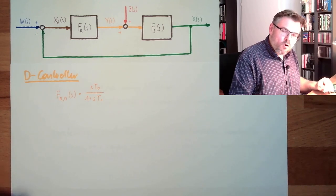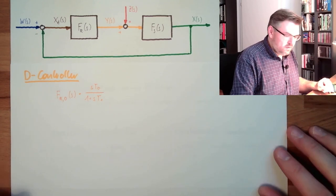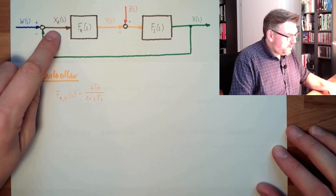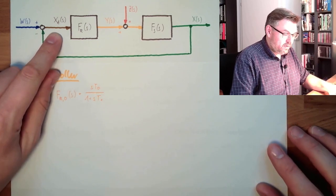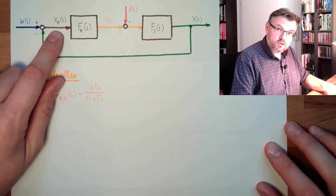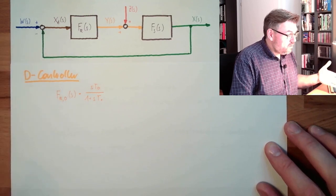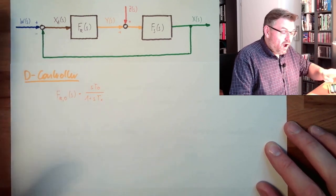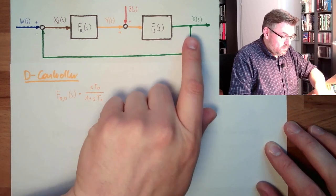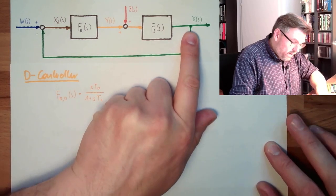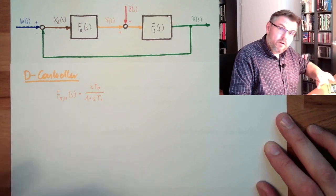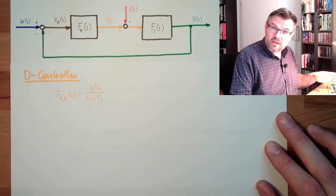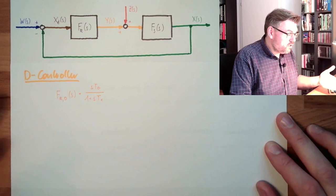Now let's imagine what the D-controller is doing. A D-controller reacts to the change rate of the deviation. If we could imagine something where the controlled variable and the reference variable are really far away but constant, the deviation is constant, the D-controller does not even care.